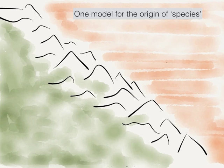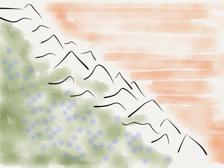What I want to do is give you just one model for the origin of — let's call them species. There are lots of other models for speciation, but this is one that we think is very plausible and probably responsible for a fair amount of diversification. We start out with a population that's on one side of a mountain range — a population of plants.